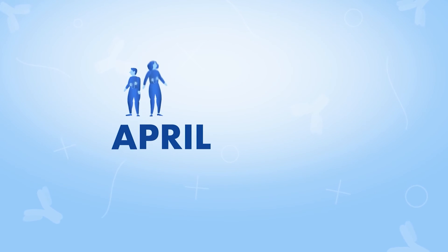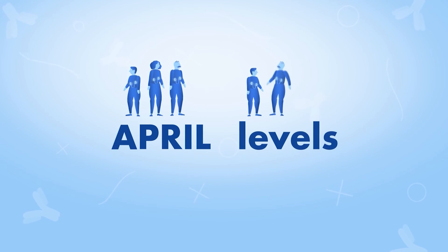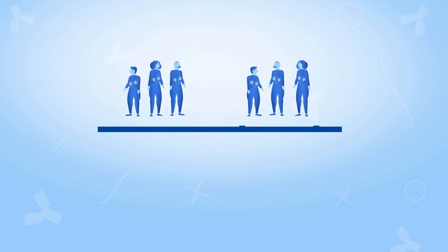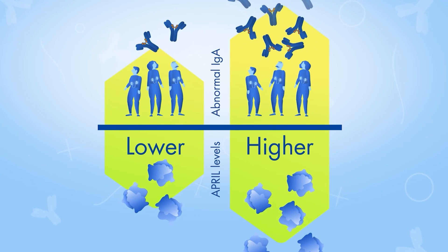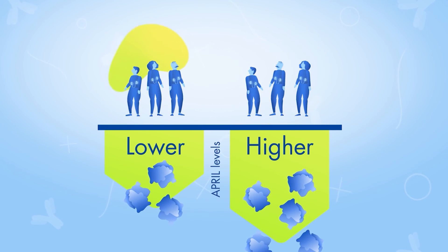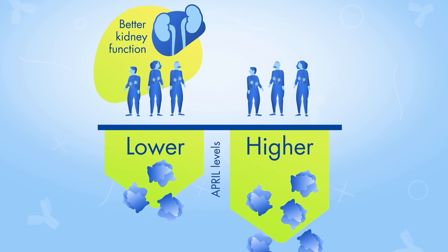In early research studies comparing APRIL levels in different patients with IgAN, patients with lower APRIL levels produced less abnormal IgA. They also retained better kidney function compared with patients with higher APRIL levels.